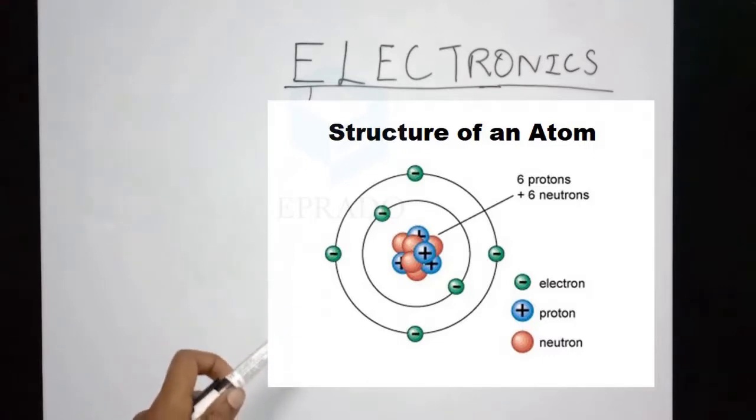The atom has protons and neutrons at the center and electrons revolving around them in a particular shell, that is a particular orbit.